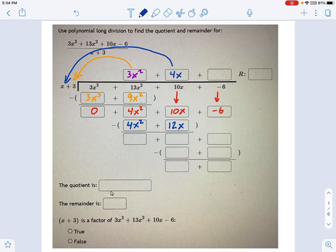So now we subtract the blue line from the red line. What do we get? Well, 4x squared minus 4x squared is 0. 10x minus 12x is negative 2x. And then I carry down my negative 6. And now I have negative 2x minus 6.